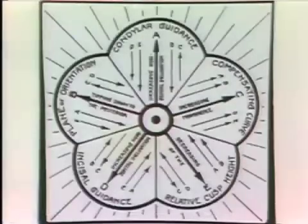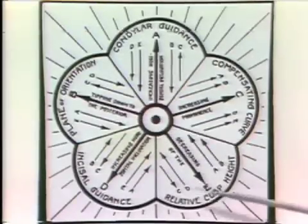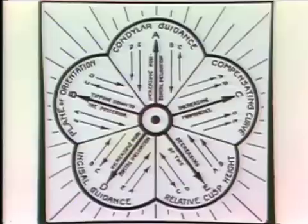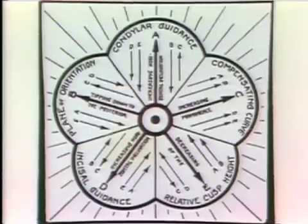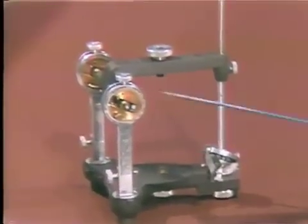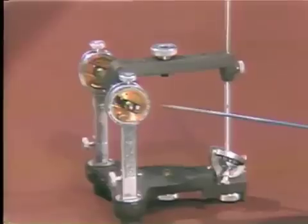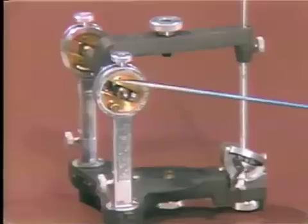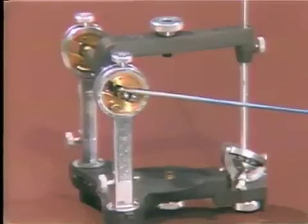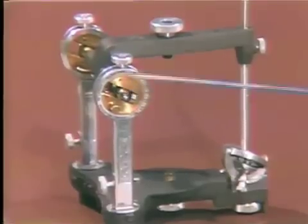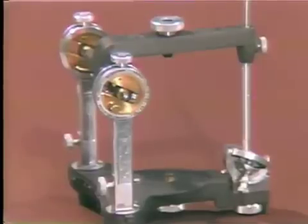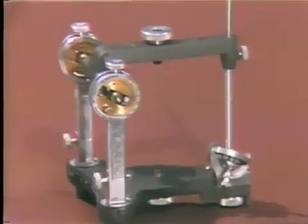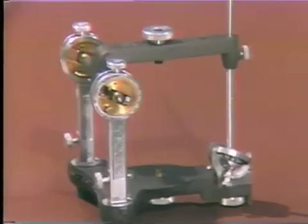The other three factors in Hanau's Quint — the plane of orientation, the relative cusp height, and the compensating curve — are factors which take place and are developed within the central confines of this articulator. Therefore, it becomes extremely important where we locate the maxillary and mandibular cast, which is one of the reasons for taking a facebow transfer. It allows us to position the cast in relationship to the condylar mechanism. These five factors are extremely important in articulation, and one must utilize this instrument to its fullest capabilities to achieve bilateral balanced articulation.